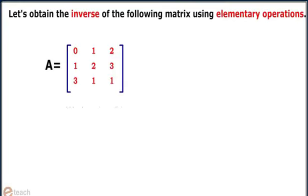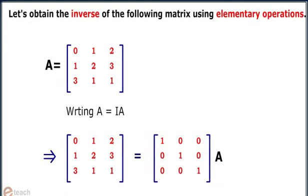Let's see an example. Let's obtain the inverse of the following matrix using elementary operations. The matrix A equals 0, 1, 2, 1, 2, 3, 3, 1, 1.